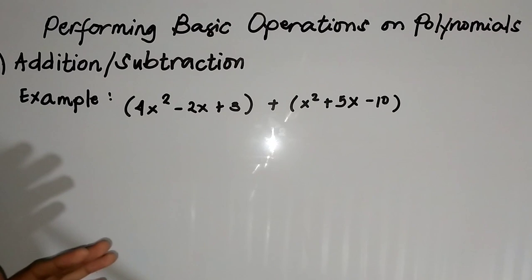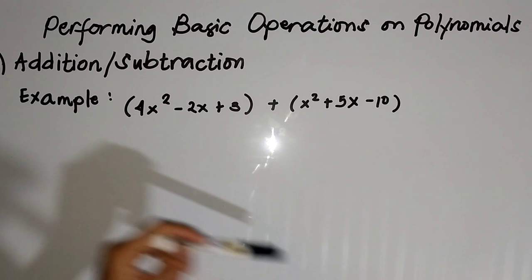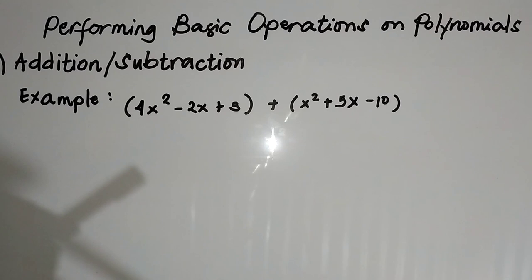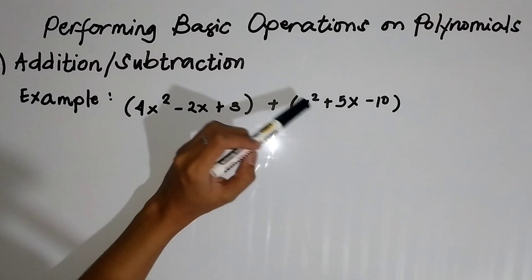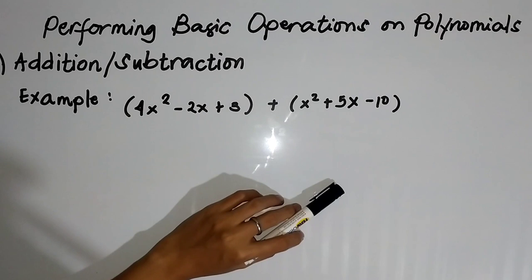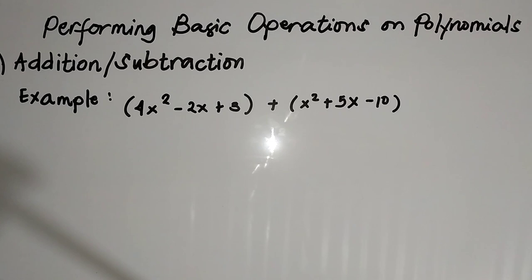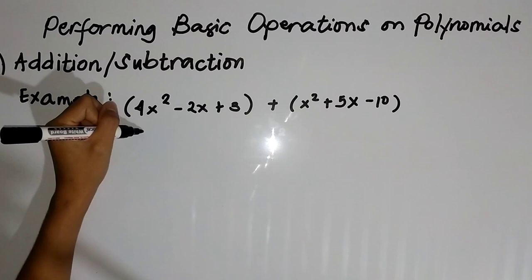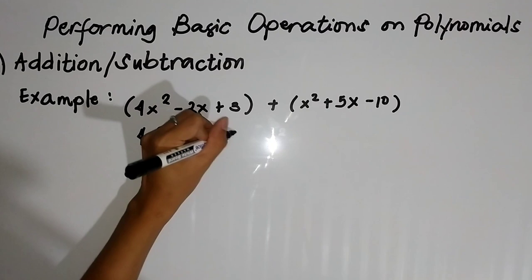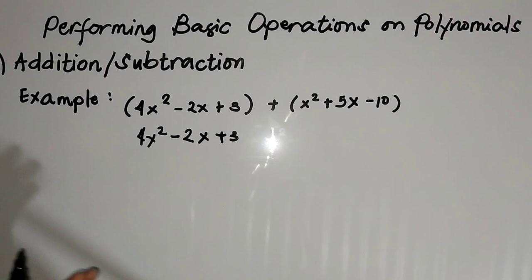In our example here, our task is to add 4x squared minus 2x plus 3 and x squared plus 5x minus 10. Ano yung i-distribute natin using the distributive property? Yung operation natin, which is addition, you will just multiply this to each term of the polynomial — meaning multiply mo positive sign to x squared, 5x, and negative 10. Unang gagawin mo is to copy the polynomial on the left: we have 4x squared minus 2x plus 3.